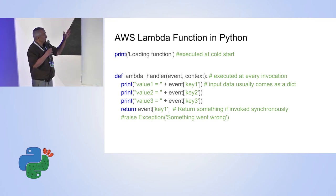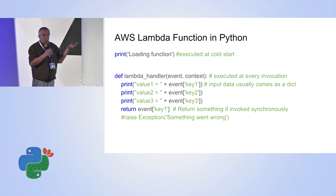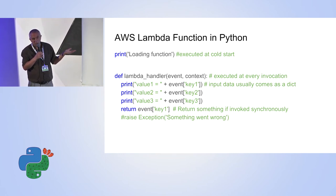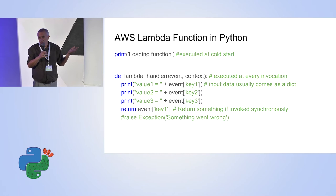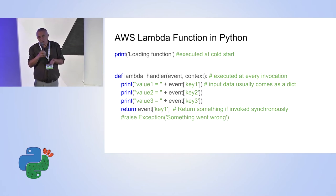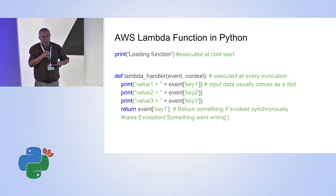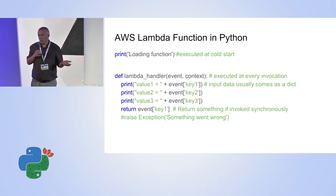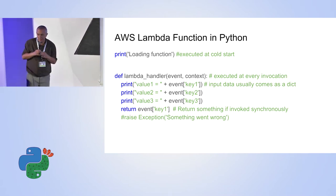It's as simple as that. You could type this code in the Amazon console, or develop it on your local machine, zip the file, and upload it to the cloud. That's all you need — nothing more.